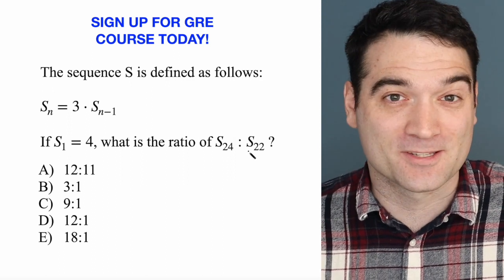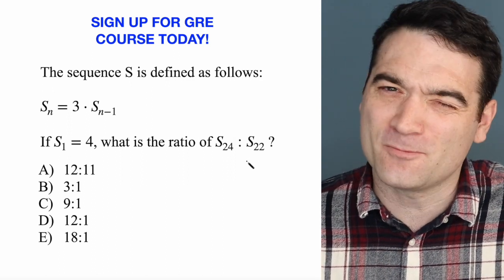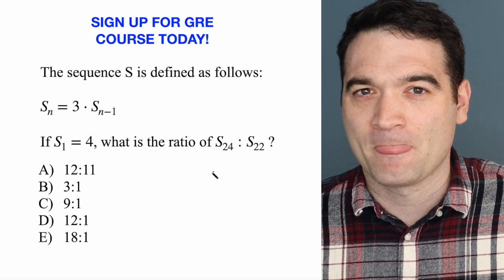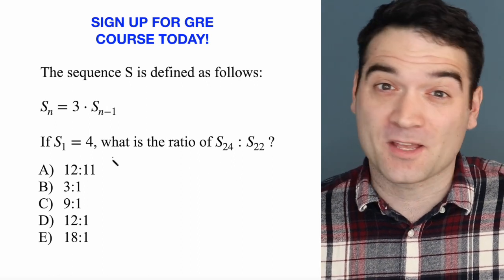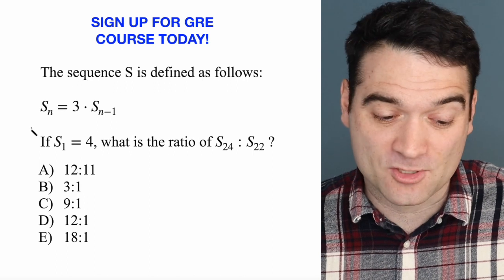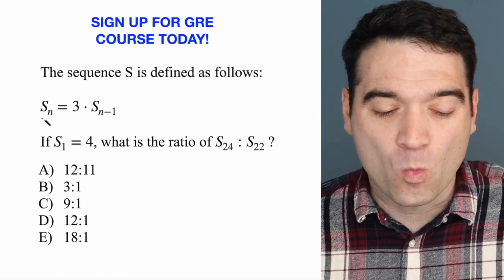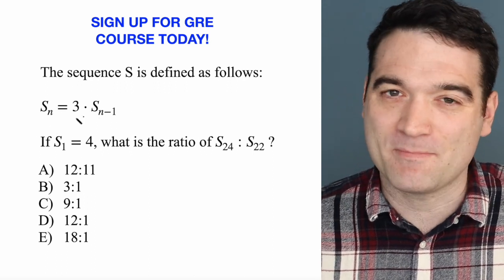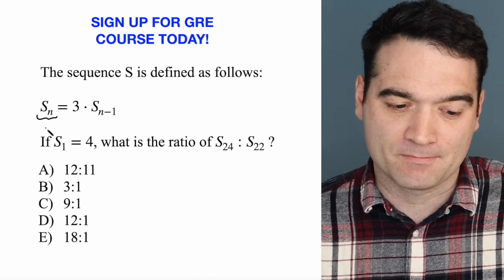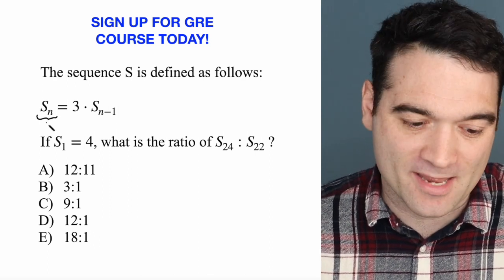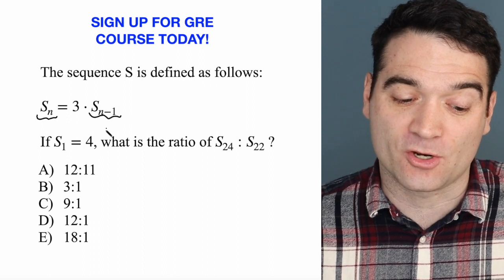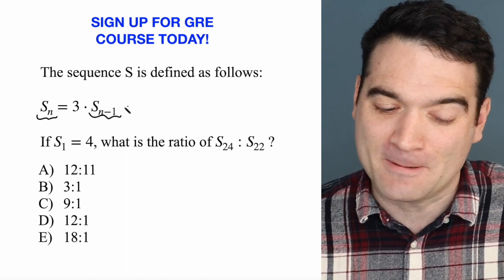Sequence questions can be really, really tough. And the toughest part about them is the notation. But the concept is actually pretty straightforward. What this statement basically says is that to find the next term in a sequence, S sub n, you take the previous term and multiply it by 3.